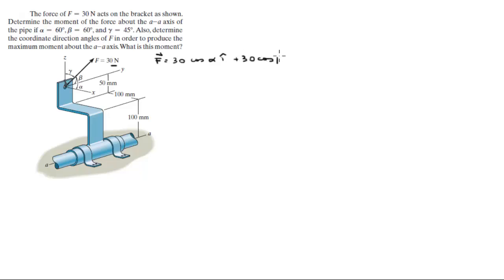Plus 30 cosine of beta in the j, plus 30 cosine of the last angle in the k. So this force comes out to be 15 in the i plus 15 in the j plus 21.2 in the k.